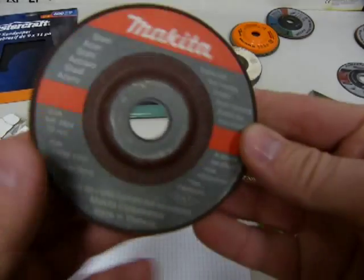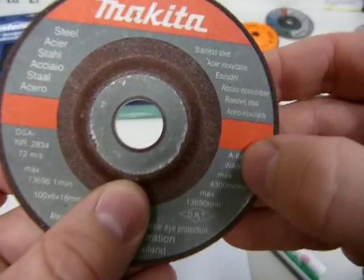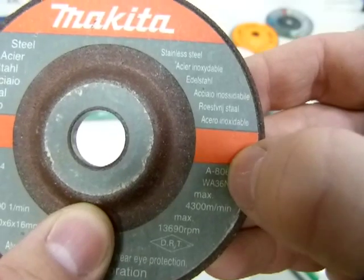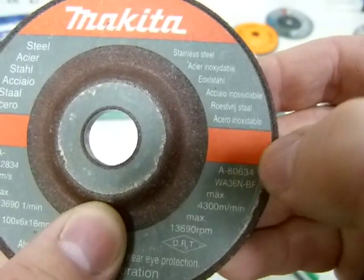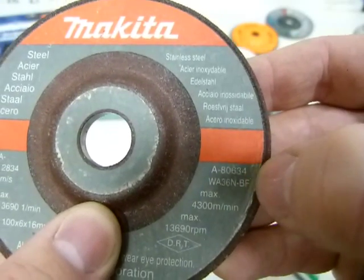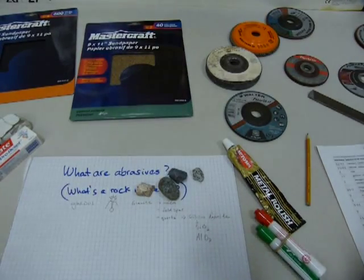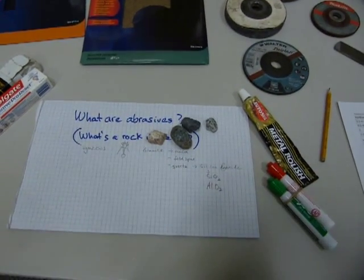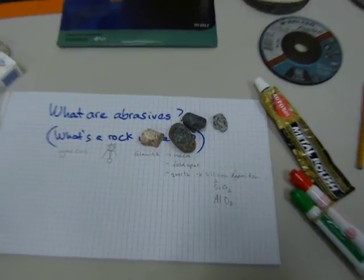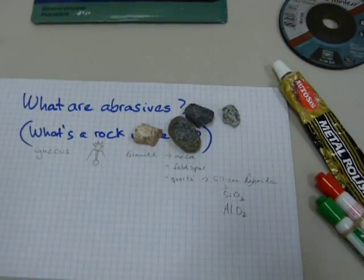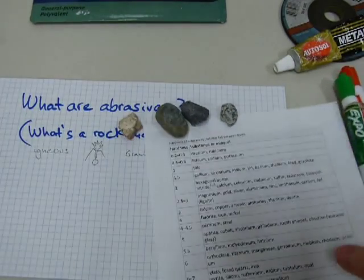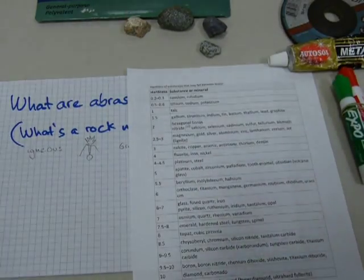This one here is also 'A' for aluminum oxide with grit 80 particles. So aluminum oxide is probably the most widely used abrasive. Why is that? It is because of its hardness.